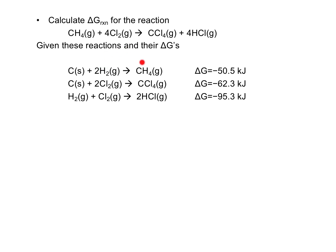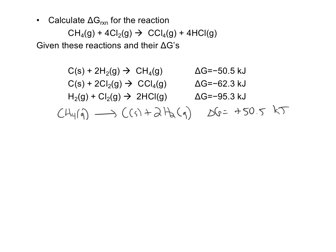I'm going to flip the reactants and products, which means I'll change the sign on delta G. So this new reaction, when rewritten, is CH4 gas goes to carbon solid plus 2H2. Since I just flipped this first reaction, the delta G for this new reaction is positive 50.5 kilojoules.